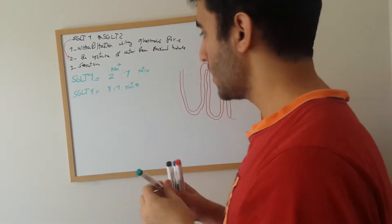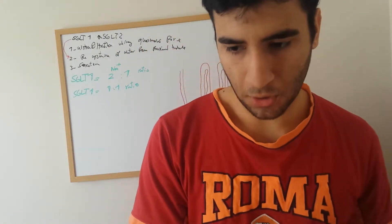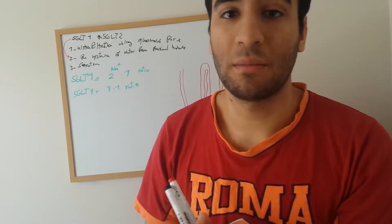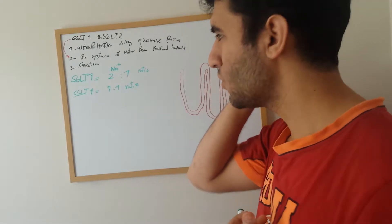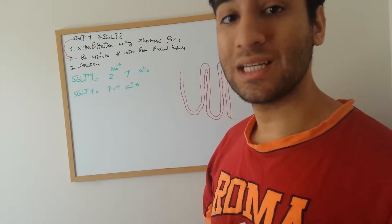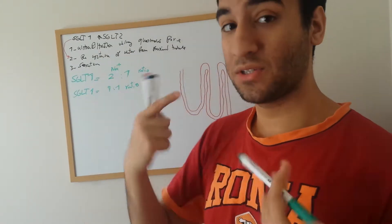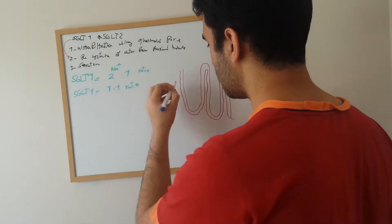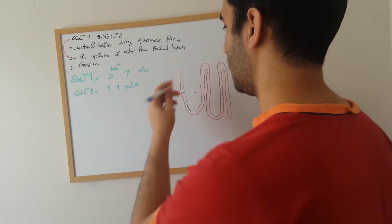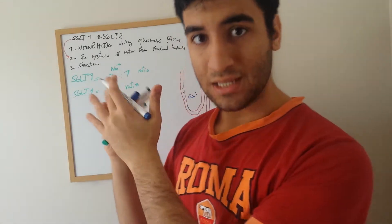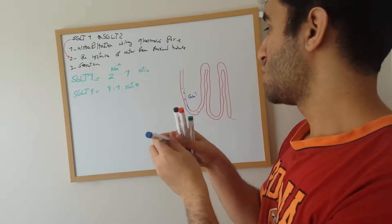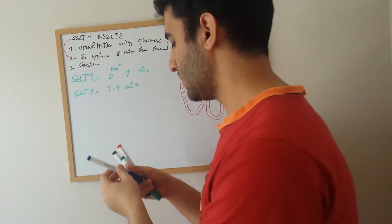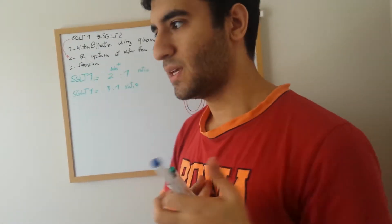With the two-to-one ratio, the transporter must bind two sodium ions before it undergoes a conformational change, allowing sodium to move to the other side of the membrane. This releases more free energy as the sodium moves down its electrochemical gradient. There is higher sodium concentration inside the proximal tubule and higher glucose concentration outside, so SGLT2 must bind two sodiums and one glucose before transporting them.